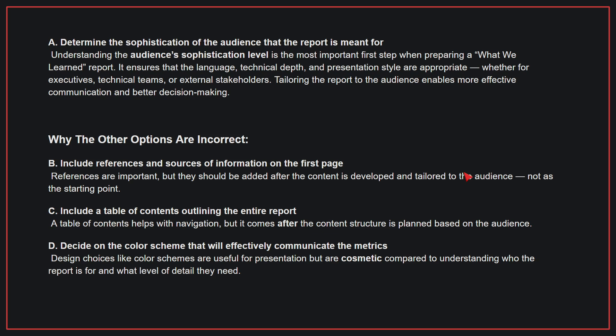Why the other options are incorrect: B. Include references and sources of information on the first page — references are important, but they should be added after the content is developed and tailored to the audience, not as the starting point. C. Include a table of contents outlining the entire report — a table of contents helps with navigation, but it comes after the content structure is planned based on the audience. D. Decide on the color scheme that will effectively communicate the metrics — design choices like color schemes are useful for presentation, but are cosmetic compared to understanding who the report is for and what level of detail they need. Therefore, the correct answer is A.